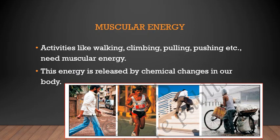The first form of energy is muscular energy. Activities like walking, climbing, pulling, pushing, etc. need muscular energy. This energy is released by the chemical changes in our body — it is our strength, the energy with which we can do things. Any kind of work we do requires muscular energy. Our elders insist we eat nutritious food because nutritious food helps increase our muscular energy.